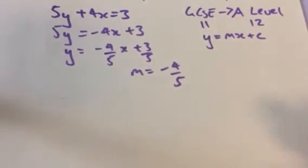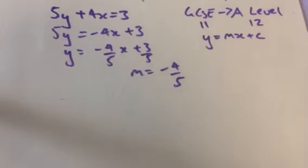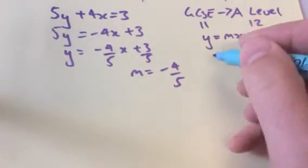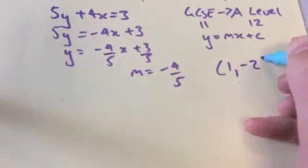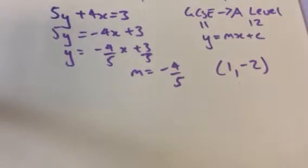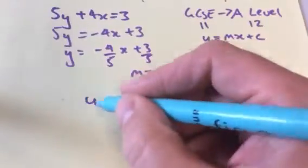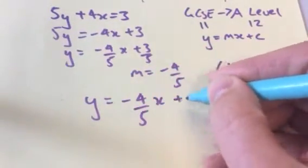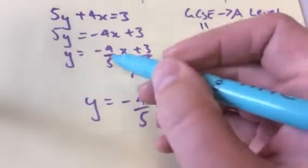They then say to us that there's another line that's parallel to this. And we know that parallel lines have the same gradient. So we're going to keep the gradient like that. But it goes through the point 1 minus 2.